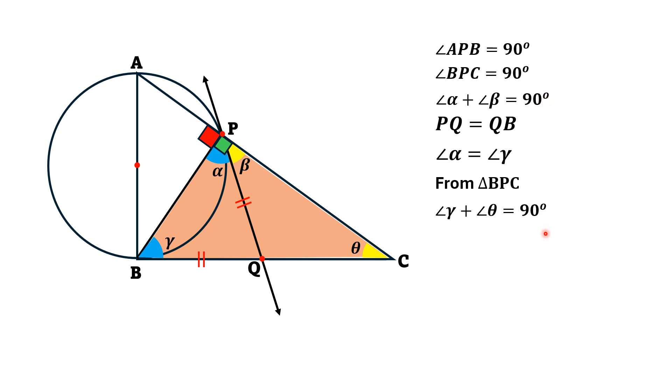So, by comparing these two equations, we find that angle alpha plus angle beta equals angle gamma plus angle theta. From this equation, we have angle alpha equals angle gamma. Replacing this value, angle gamma on left and right will cancel out and thus angle beta will equal angle theta.